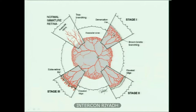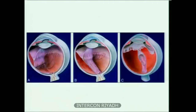Another important classification factor is plus disease — dilatation and tortuosity of the posterior blood vessels around the disc and the macula, the center of the retina. Plus disease also determines when to treat. On the wide-angle retinal camera you can see the disc, the posterior blood vessels with tortuosity and engorgement — that is plus disease — along with the ridge and extra retinal new blood vessels, and the avascular retina. This is what we treat with ablative therapy, either cryo or laser.